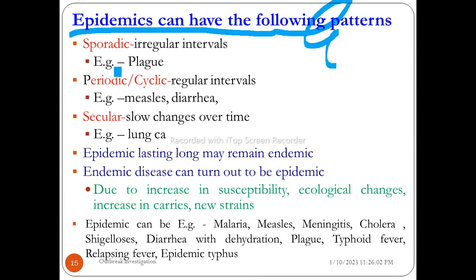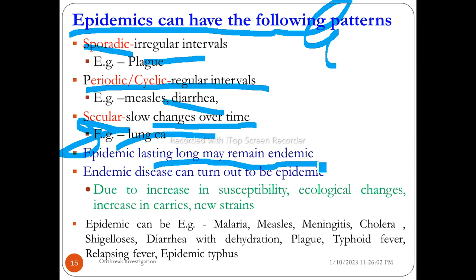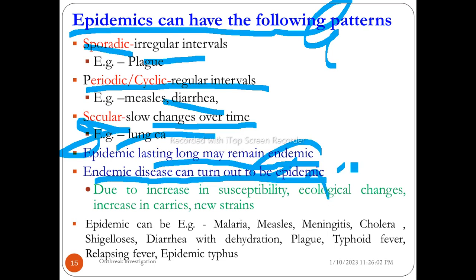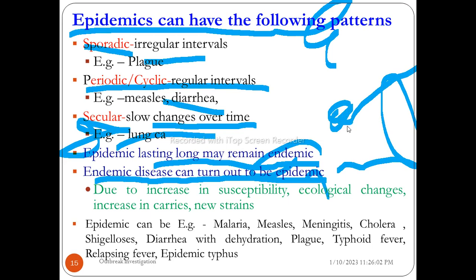Epidemics can have the following patterns: sporadic, at regular intervals such as a periodic cycle (like measles), secular — a slow change over time (like lung cancer). An epidemic lasting long may remain endemic, and an endemic disease can turn out to become epidemic.